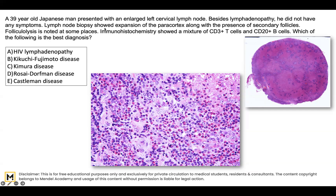Lymph node biopsy shows expansion of the paracortex along with the presence of secondary follicles. Folliculolysis is noted at some places. Immunohistochemistry shows a mixture of CD3-positive T cells and CD20-positive B cells. Which of the following is the best diagnosis?